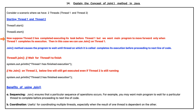In this case we can use the join method on Thread 1. The join method causes the program to wait until the thread on which it is called completes its execution, before proceeding to the next line of code.